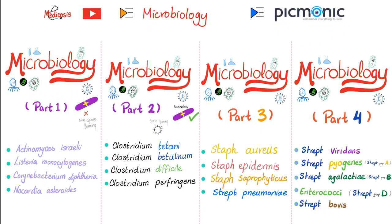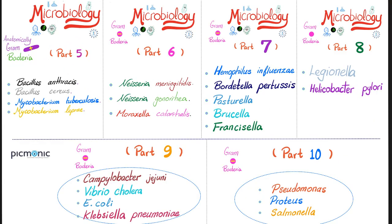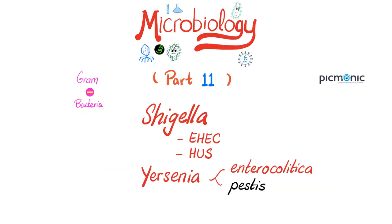In video number one we talked about gram positive organisms, video two covered more gram positives, video three started the cocci instead of the rods, video four was also gram positive cocci, video five covered anthrax, tuberculosis, and leprosy, and in video six we started talking about gram negatives. Today, also gram negatives, we'll talk about Shigella and enterohemorrhagic E. coli.